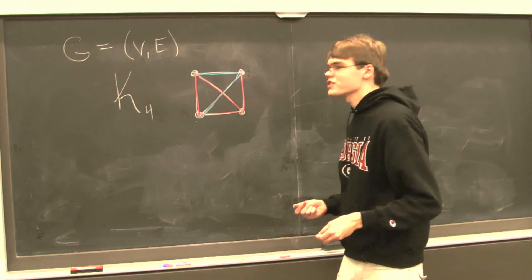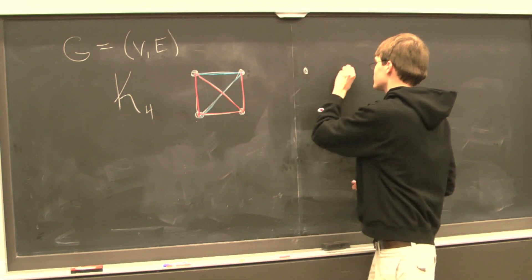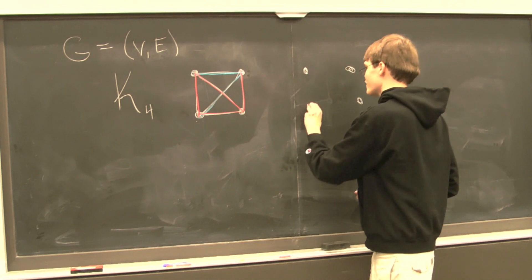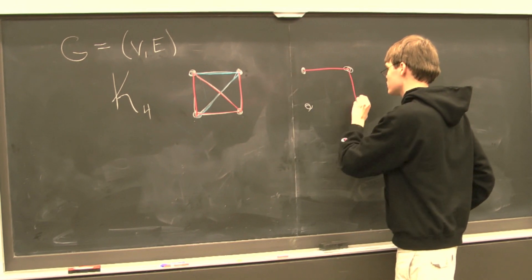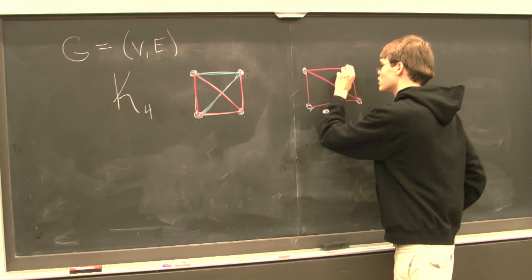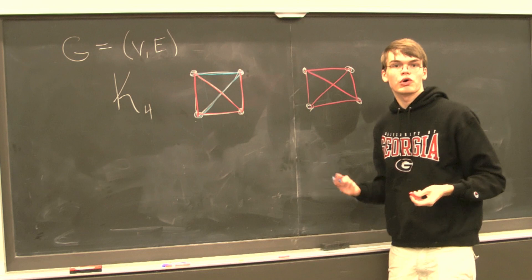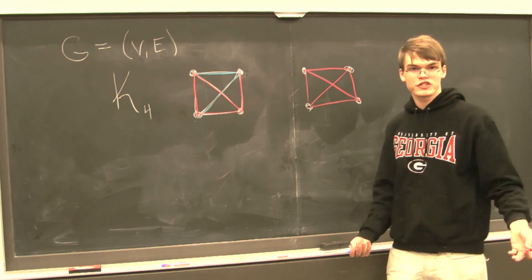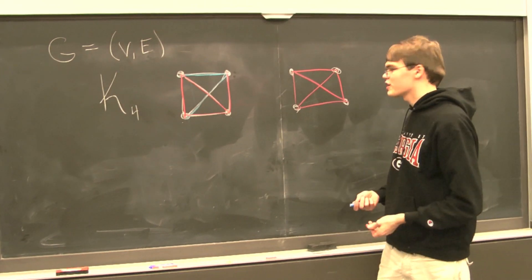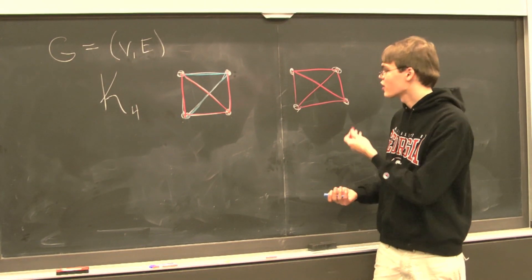But what's also important to note is that this is also a possible two coloring. Even though blue is at our disposal, we simply chose not to use blue to color our graph.